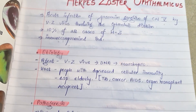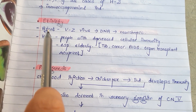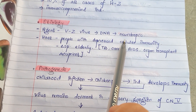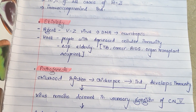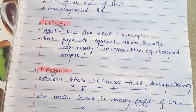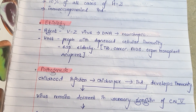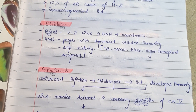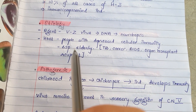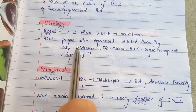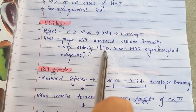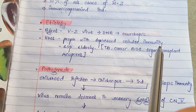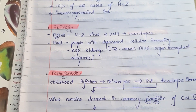The etiological agent is the varicella zoster virus. It is a DNA virus which is neurotropic in nature, and this virus also produces acidophilic intranuclear inclusion bodies. The disease can develop in any age group, but is most commonly seen in individuals with depressed cellular immunity, especially the elderly suffering from disseminated tuberculosis, cancer, leukemia, Hodgkin's and non-Hodgkin's lymphoma, AIDS, and organ transplant recipients.